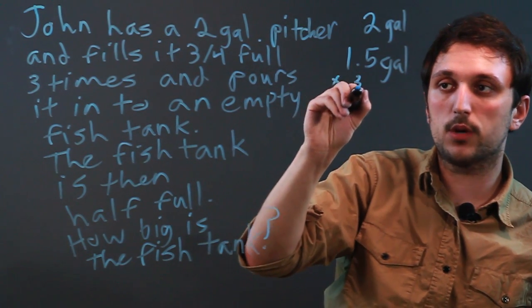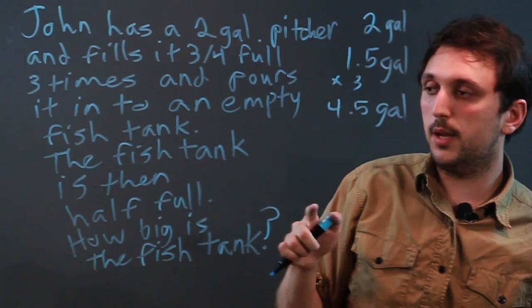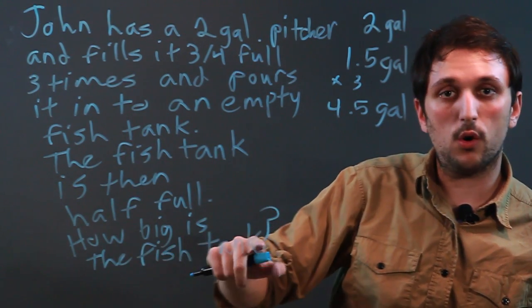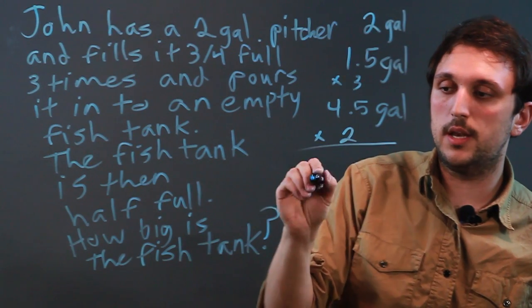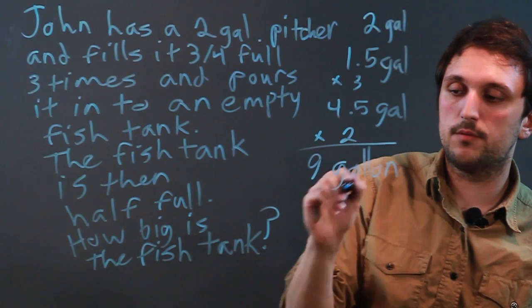So 1.5 times three is 4.5 gallons and they're saying that the fish tank is now half full and we want to know the size of the whole fish tank. So 4.5 gallons times two equals nine. So it's a nine gallon fish tank.